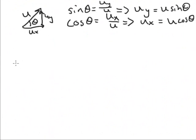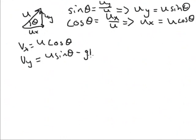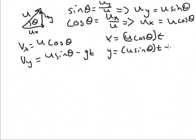We can now take these and put them into our equations. So we get v sub x equals u cosine theta. We have v sub y is equal to u sine theta minus g t. x is equal to u cosine theta times t, and y is equal to u sine theta times t minus 1 half g t squared.